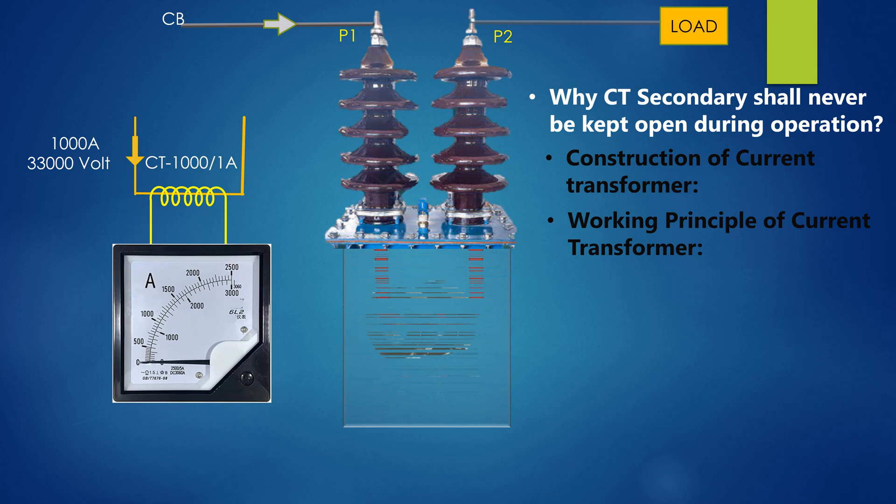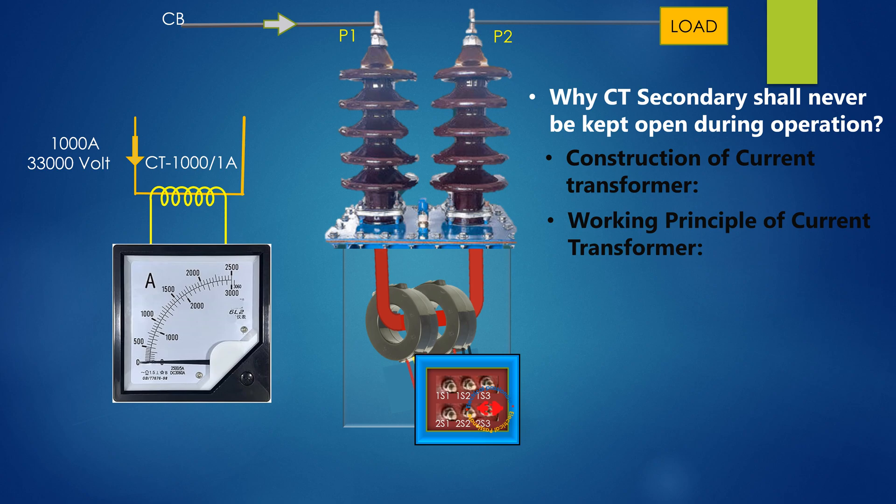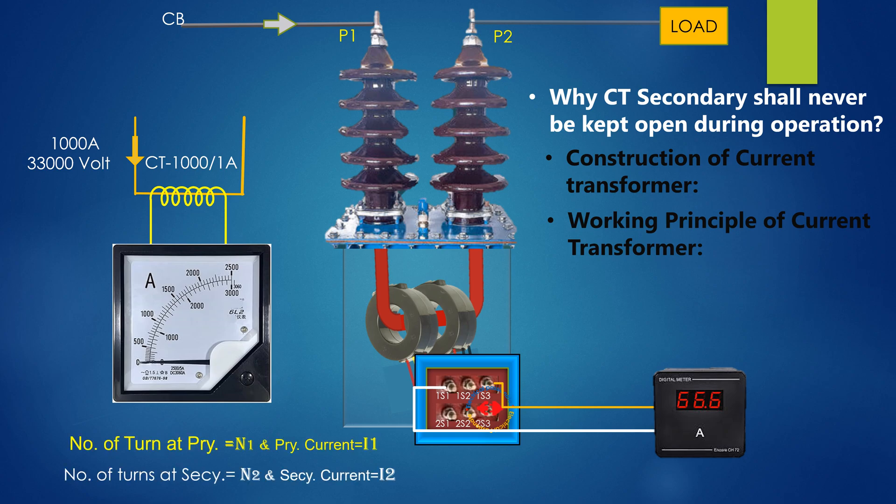Here, the current transformer consists of two round type cores upon which secondary windings of many turns is wound and primary windings of single turn passes through the core. The primary windings of the transformer is connected in series with the load and carries the actual current to the load. The secondary winding of the CT is connected to a measuring device and ammeter. The number of secondary turns is proportional to the current flowing through the primary. That is, the larger the magnitude of primary current, the greater the number of secondary turns, which in turns lower the secondary current.